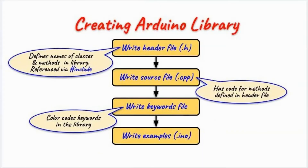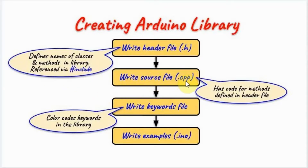Creating an Arduino library begins by writing the header file, which will have the extension .h. The header file will declare the names of classes and methods used in the library, and will be referenced within the C++ sketch using the hash include directive. Next, we write the source file, which will have extension .cpp, and this source file will have the code for the methods defined in the header file.